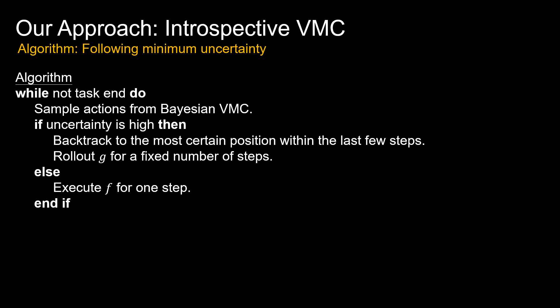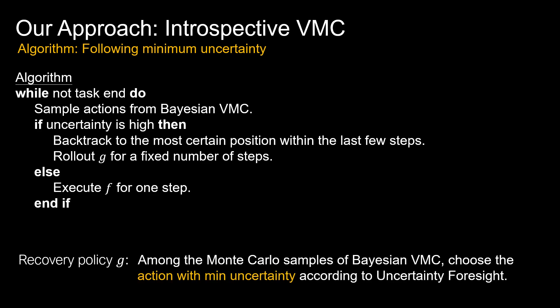When the uncertainty is high, we backtrack to the most certain position within the last few steps, and then we roll out the recovery policy G for a fixed number of steps. If the uncertainty is low, we execute the normal policy F.